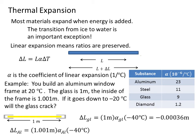If we look at the change of the aluminum frame, it goes from 1.001 meters times its coefficient, alpha aluminum, which is larger, 23 times 10 to the minus 6, times minus 40, the same change in temperature. And that drops down to minus 0.00092 meters.